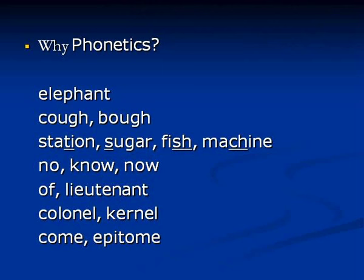Look at the next two words. They are pronounced exactly the same way but they are so different in their spelling: 'colonel' — the first colonel is an army officer whereas the second is an edible part of a nut. Look at the last two words: 'come' and 'epitome'. The final E is silent in 'come' whereas it is realized as 'E' in 'epitome'.